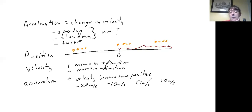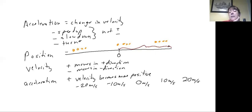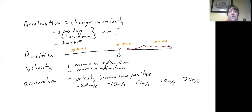When my acceleration and my velocity have opposite signs, I'm slowing down. So when I had a negative velocity and a positive acceleration, I was slowing down. When my velocity became positive and my acceleration was still positive, then I was speeding up — because the next velocity value will be 20 meters per second.